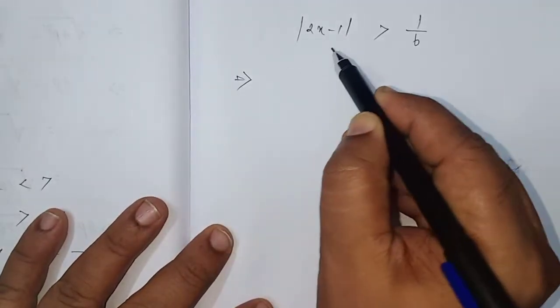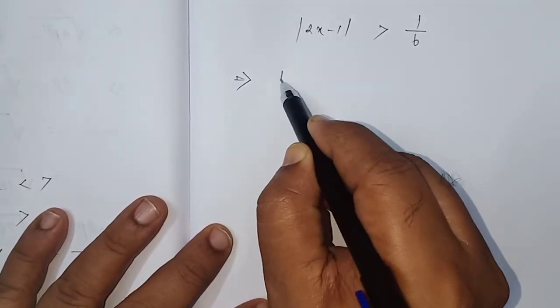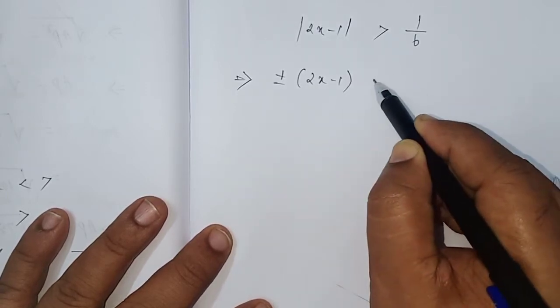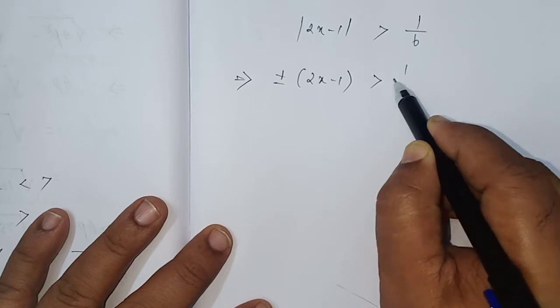You know very well, the modulus can be replaced by plus or minus always. Plus or minus of 2x minus 1 which is greater than 1 by 6.